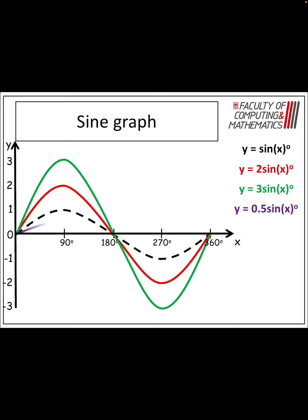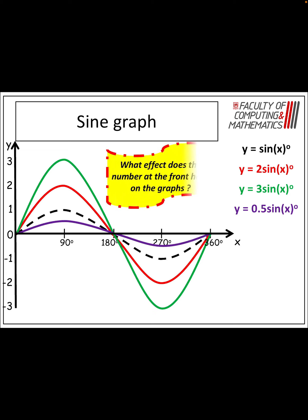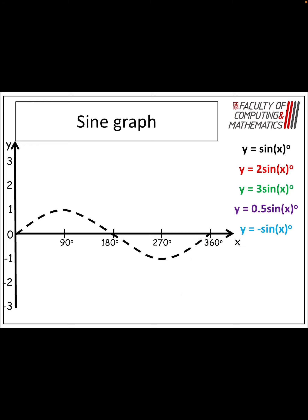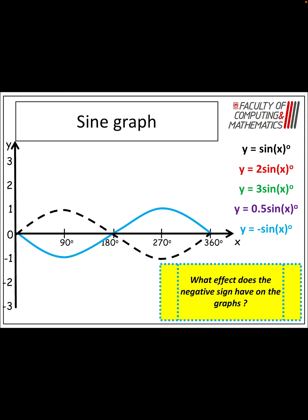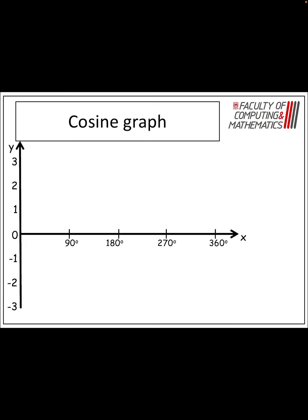The effect of the number at the front is it stretches or compresses the graph up and down the y-axis, and it affects the maximum and minimum values. But what happens with a negative? This one actually flips in the x-axis — the maximum and minimum values aren't affected in size, except that it's got a minimum value at 90 degrees and a maximum value at 270 degrees.